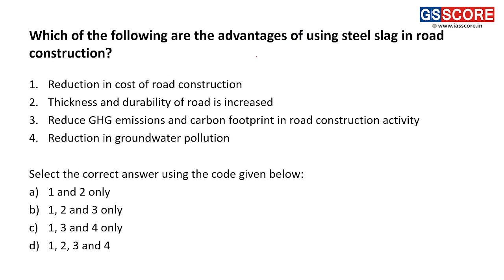Next question: which of the following are the advantages of steel slag in road construction? Steel slag is a byproduct of steel furnaces used in the steel industry. The first advantage is reduction in cost of road construction — since steel slag is a byproduct, it will obviously lead to cost reduction. So, the first statement is correct.